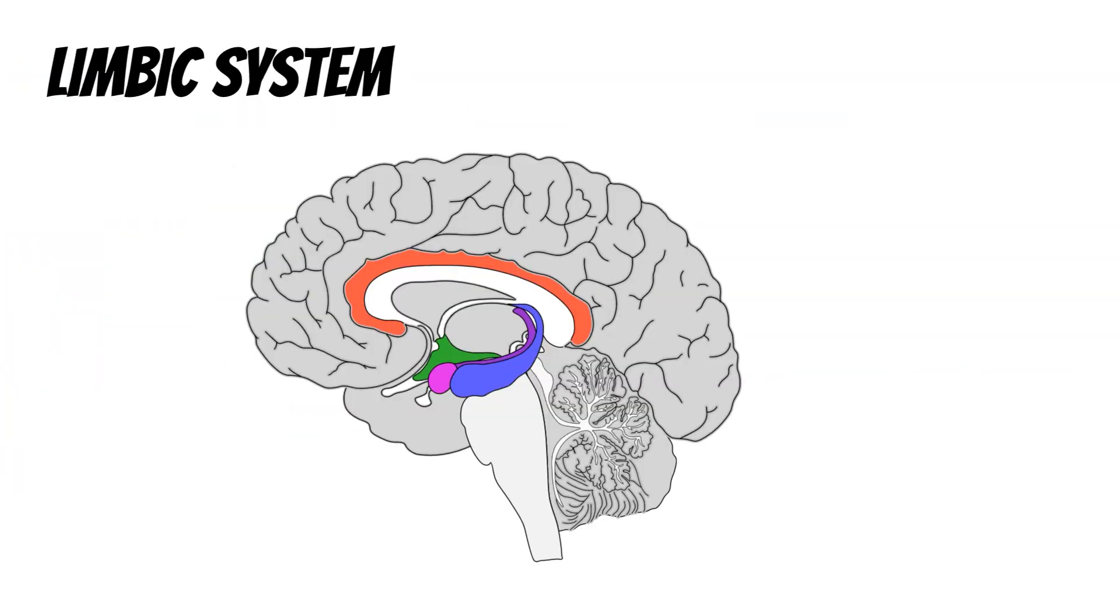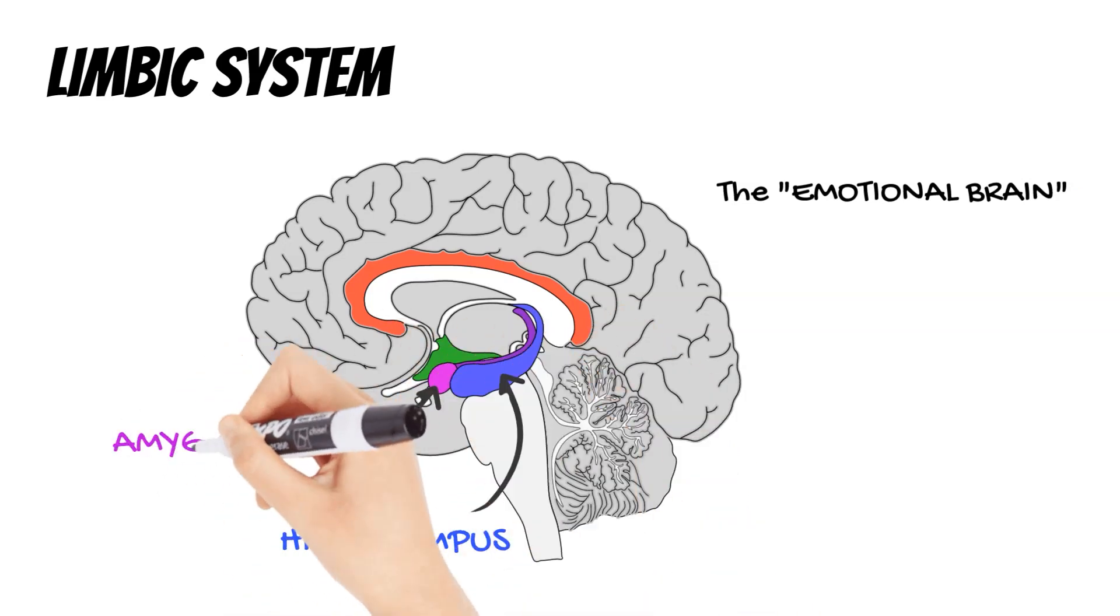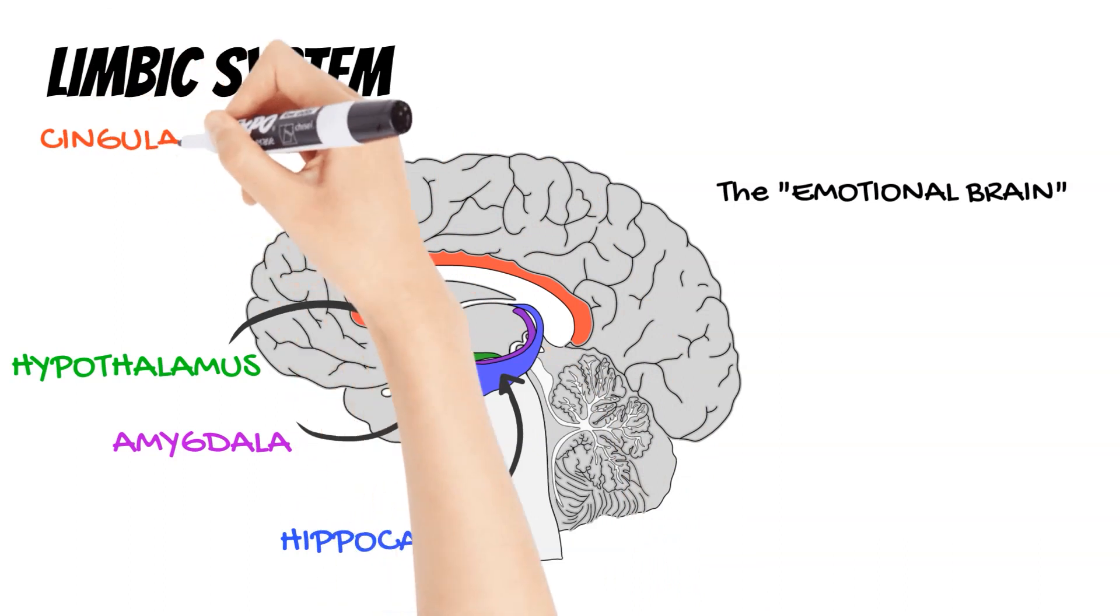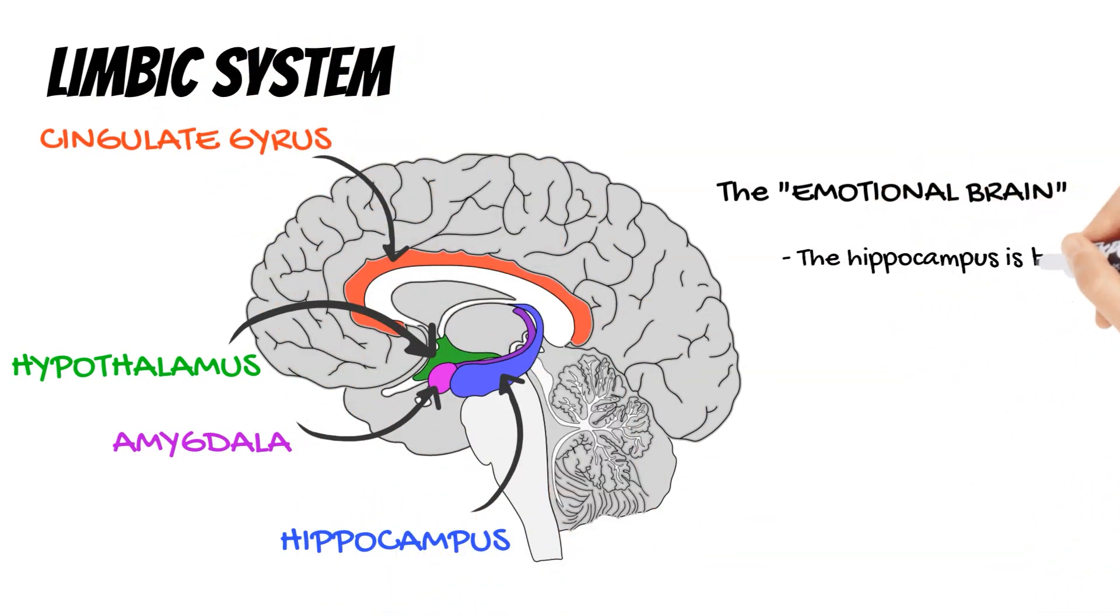Beneath the cerebral lobes lies the limbic system, often dubbed the emotional brain. This complex network, including the hippocampus, amygdala, hypothalamus, and cingulate cortex, governs our emotions, drives, and long-term memory. The hippocampus acts as the keeper of our memories, turning daily experiences into lasting impressions. The amygdala, meanwhile, processes emotions, playing a key role in how we perceive fear and pleasure.